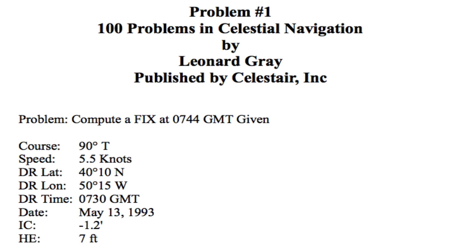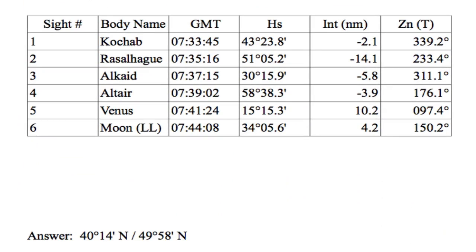Six bodies were sighted at that time. The table listed here has the GMT times for the sights and the altitudes of the sights. I've also included the intercept and the azimuth for the sight reductions, just as a check while we do the problems here. You might want to print this out and have it available while we run this video on the iPod Touch.